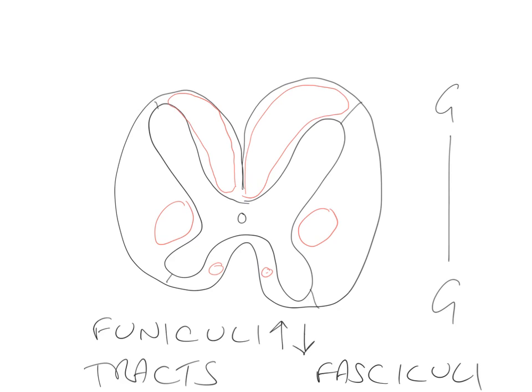The classical example of a fasciculus is found in the dorsal column pathway. In the dorsal column pathway, we have two fasciculi within the dorsal column tract - those are known as the gracile fasciculus and the cuneate fasciculus. You'll do more about that when you study the sensory system. A fasciculus can be thought of as a subdivision of a tract. That ends this brief tour of how we classify grey and white matter.